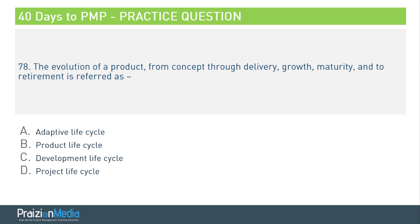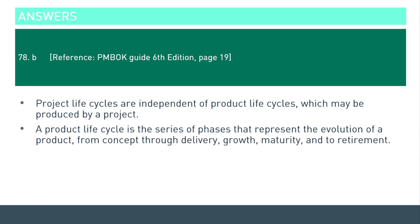Number 78. The evolution of a product from concept through delivery, growth, maturity, and to retirement is referred to as what? The answer is product lifecycle. Project life cycles are independent of product life cycles which may be produced by a project. A product life cycle is the series of phases representing the evolution of a product from concept through delivery, growth, maturity, to retirement, obsolescence, and ultimate disposal of the system.